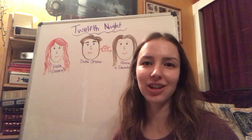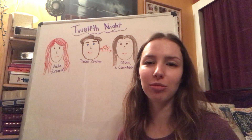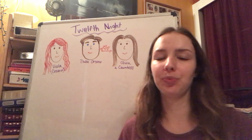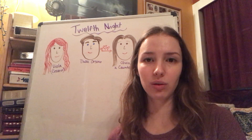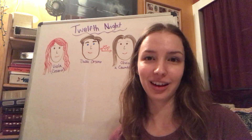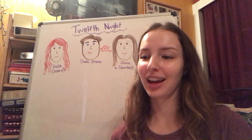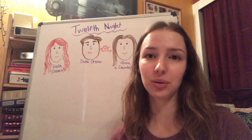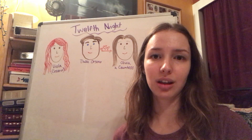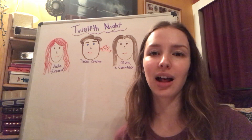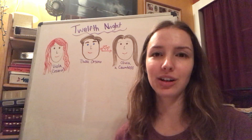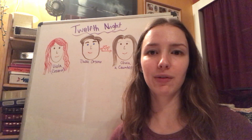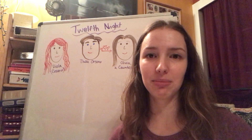Welcome to the next Shakespeare video. We're going to continue where we left off. Viola just started working for Orsino and is pretending to be a man named Cesario. The Duke Orsino asked her to go to his love, Olivia, who does not love him back, and to tell Olivia that he loves her. This is Viola's first time meeting Olivia.